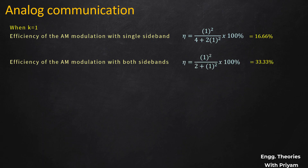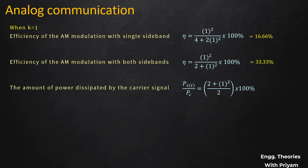The power dissipated by the carrier signal when k = 1 is P_st/Pc = (2 + 1)/2, so Pc = 66.66% of P_st. This means in amplitude modulation, 66.66% of the total power is wasted on the carrier signal, which is highly inefficient.